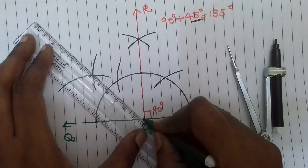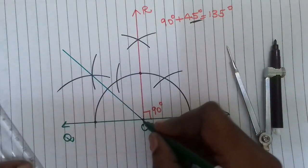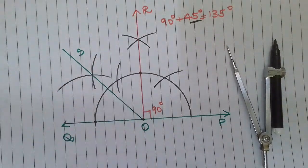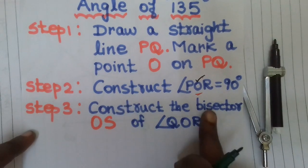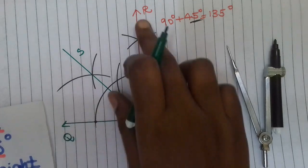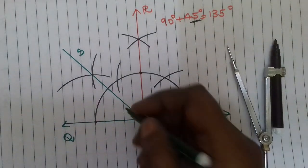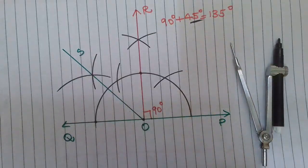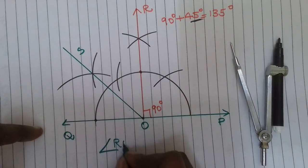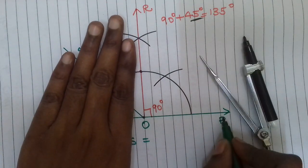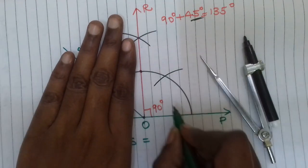Join O to S. This OS is the bisector of angle QOR. This is the third step — construct bisector OS of angle QOR. So the angle ROS is measured. Angle POR is 90 degrees.